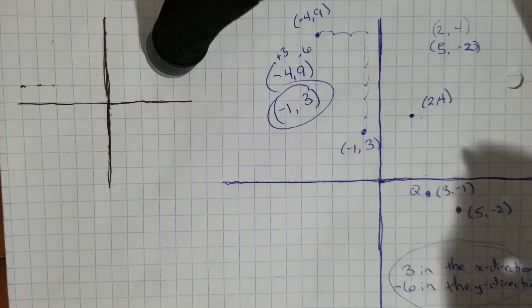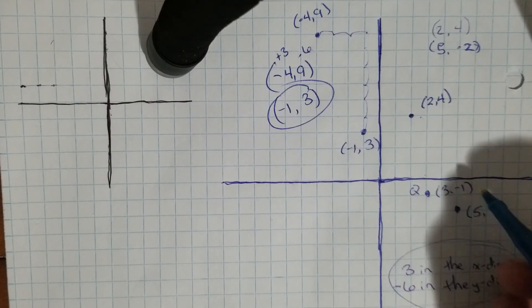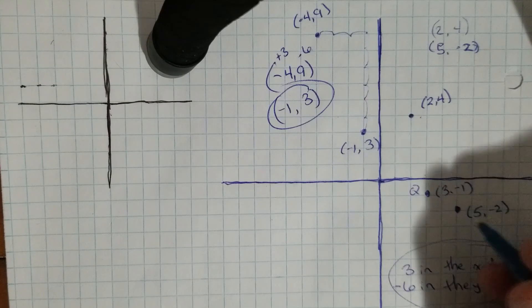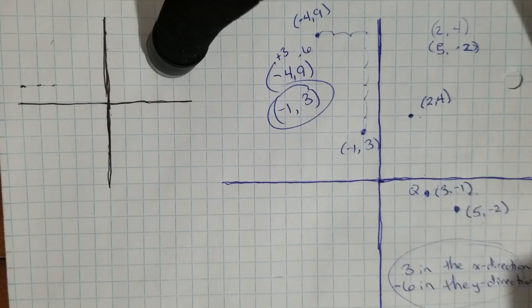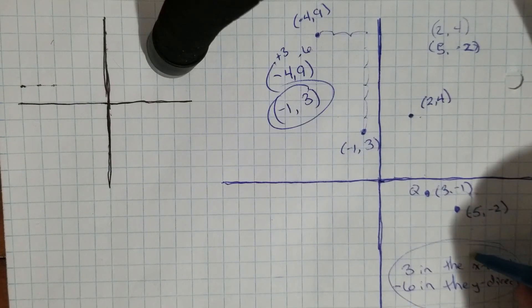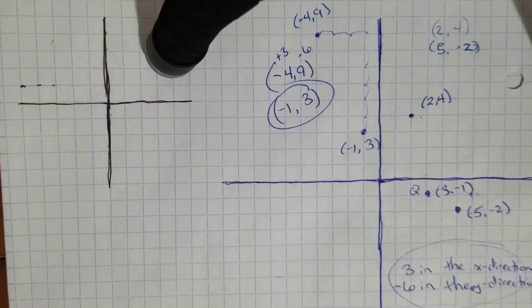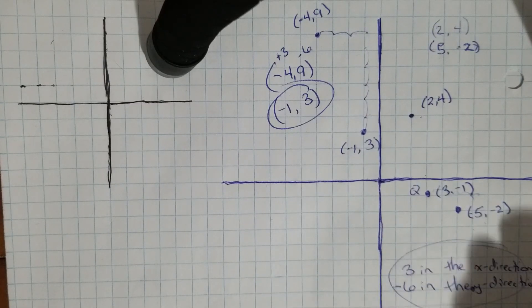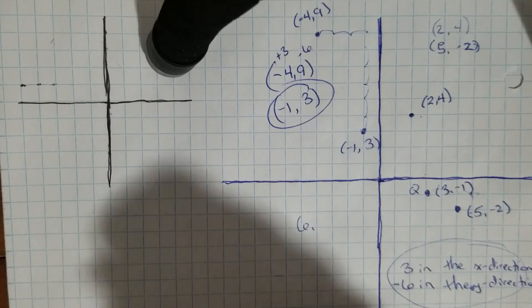We are going to go then three in the X direction, and so that's going to get us to 3 plus 3 is 6, one, two, three, and then negative six in the Y: one, two, three, four, five, six. And so you're going to be right about there, right in the middle of my explanation, but you're going to be at (6, -7).